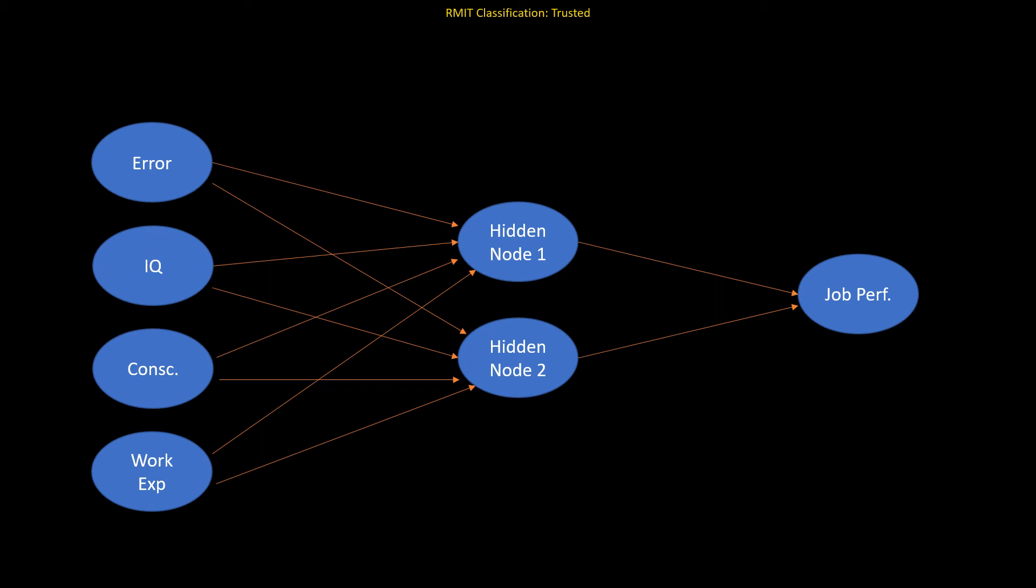So these input variables are connected to two nodes that are located in the hidden layer. And these two nodes are in turn connected to the key output variable, in this case, job performance. Each line connecting the nodes contains a weight, which is essentially a single number that expresses the strength of the relationship between the nodes. So these weights are optimized as the model learns in the training phase.